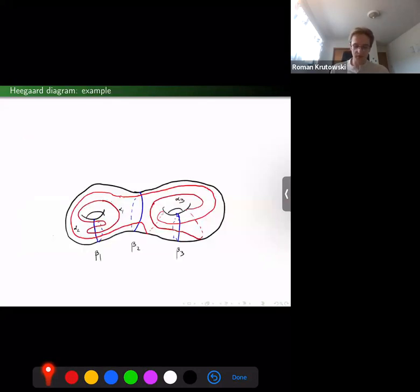For most of these two talks, we'll be working with unpointed Heegaard diagrams. Here's an example: here g equals 2 and k equals 3. There are three blue beta curves and three reddish alpha curves here.